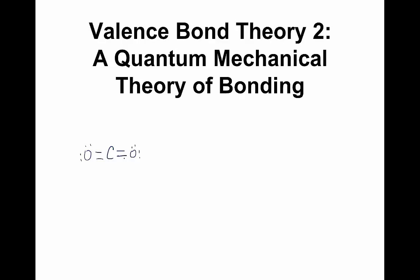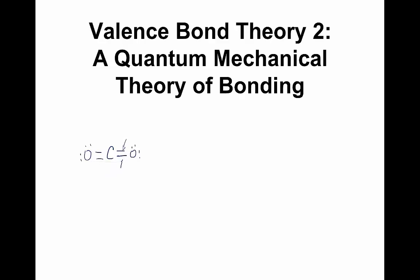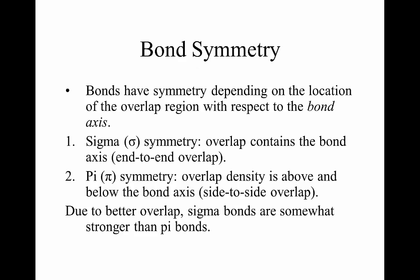In a double bond we're going to overlap one pair of orbitals to give us one bond and another pair of orbitals will give us the second bond. Before we go much further, we need to learn a little bit about bond symmetry. Chemists classify bonds based on the nature of the overlap — we call that bond symmetry. Bonds have symmetry depending on the location of the overlap region with respect to the bond axis.